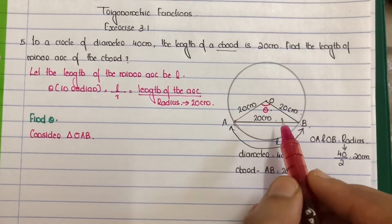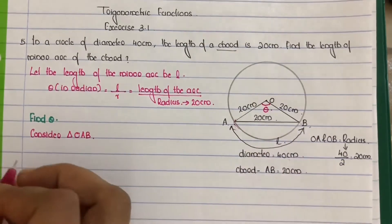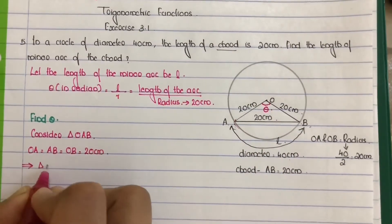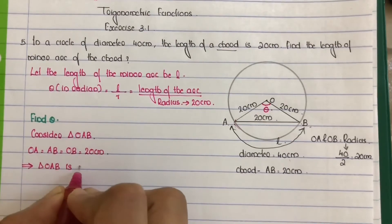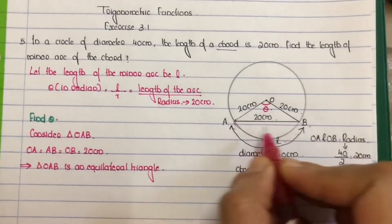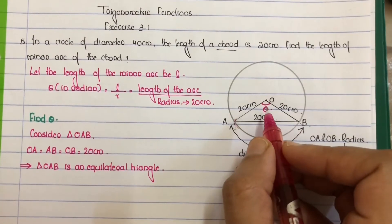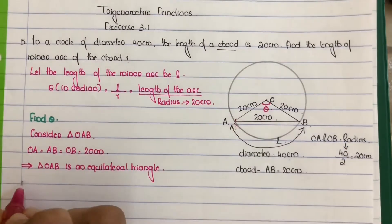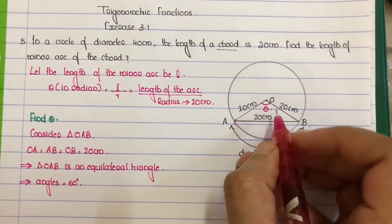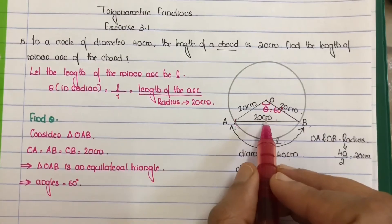Since all three sides OA, OB, and AB are equal to 20 centimeters, triangle OAB is an equilateral triangle. Therefore, angle AOB (theta) is equal to 60 degrees.